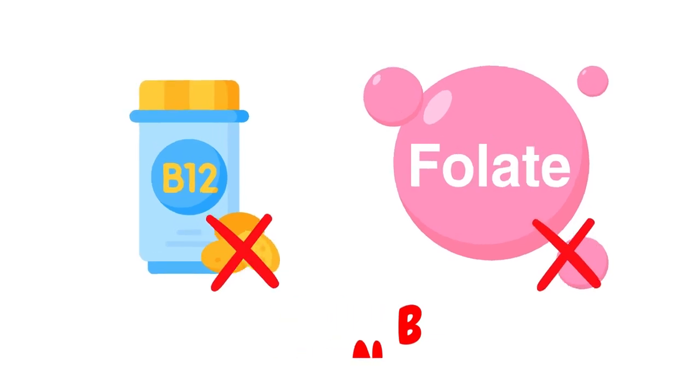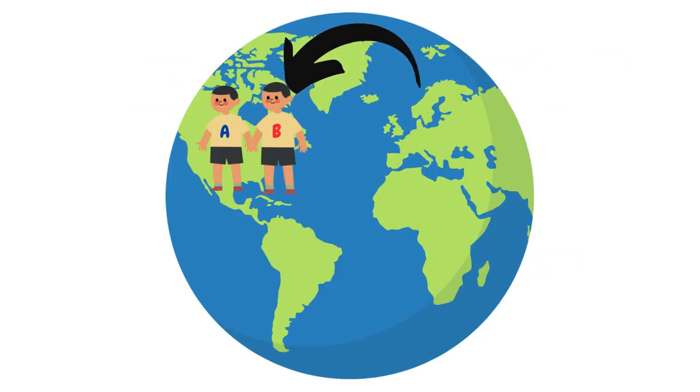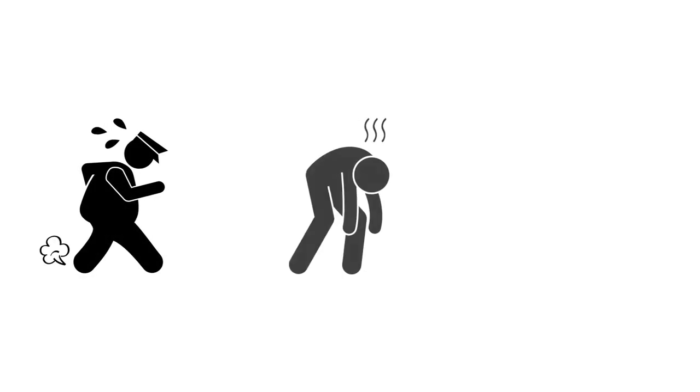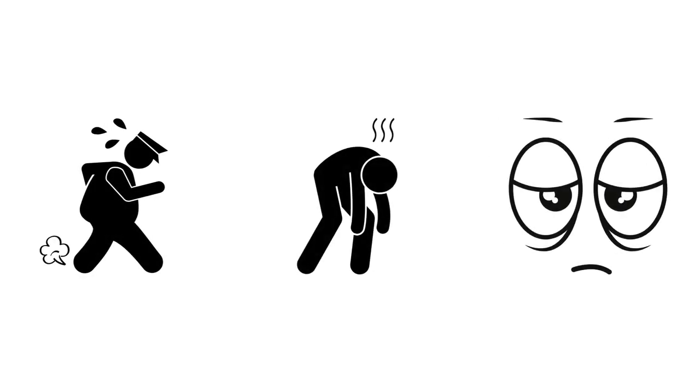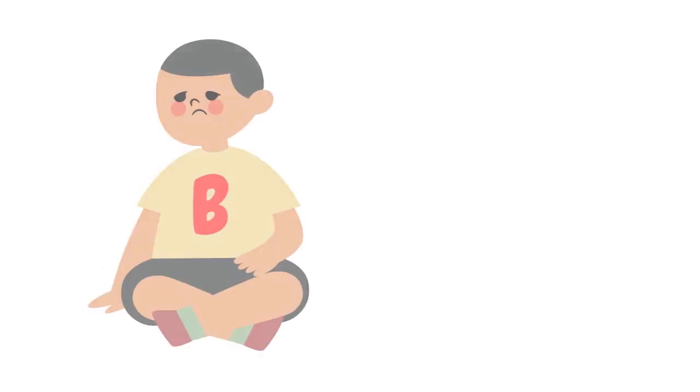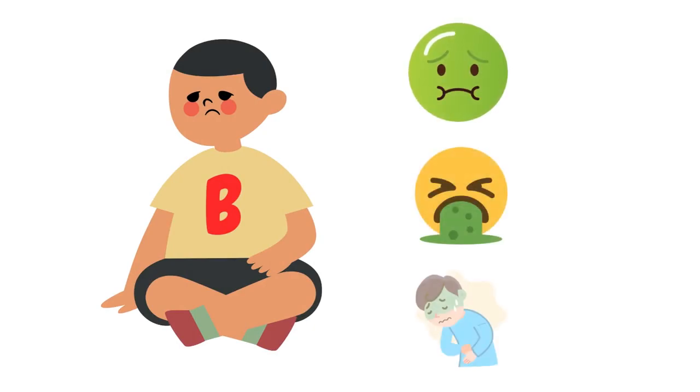Now when twin B returns home after graduating, he noticed that he is slower, weaker, and more tired than his brother. He also starts to experience symptoms like nausea, vomiting, and diarrhea more often.